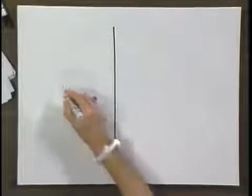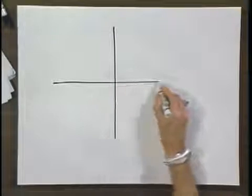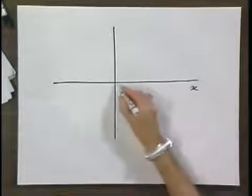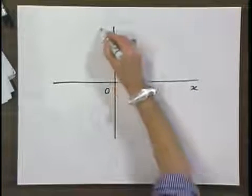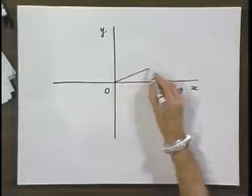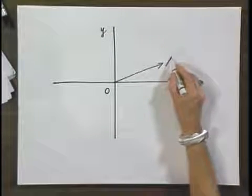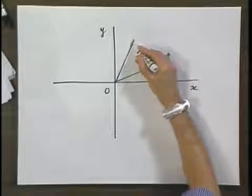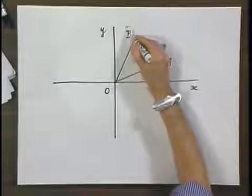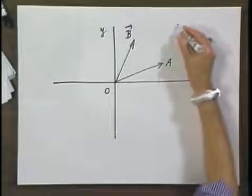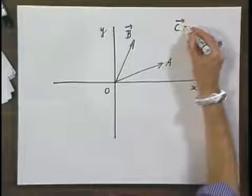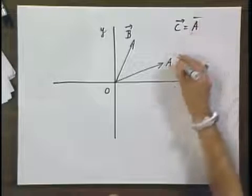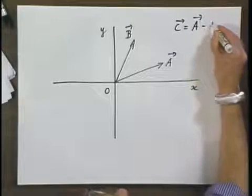So we have now here the y axis, and we have the plus x axis, the origin, plus y axis. Let this vector be A, and let this vector be B. And we want to know what vector C is, which is A minus B.